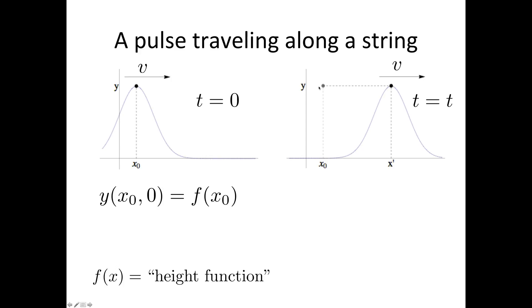And what we're going to do now is consider what happens sometime t later. Sometime t later, our pulse has moved along, and it's now at this position here. You know that distance equals speed times the time. So we know that the difference between x₀ and x′ is equal to vt. So x′ equals x₀ plus vt,